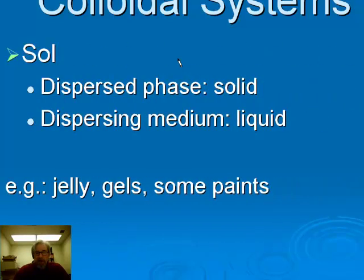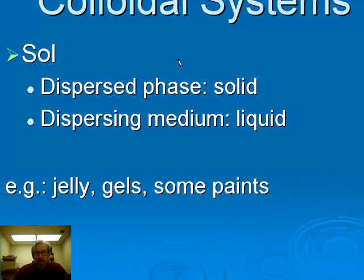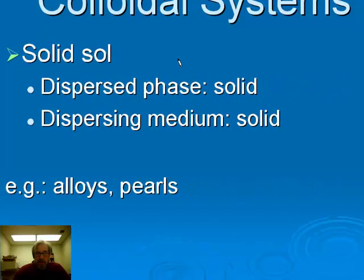A sol is a solid dispersed through a liquid — tiny particles of solid spread through a liquid. Jelly, hair gel, and some paints are sols. A solid sol has a dispersed phase that's solid and is dispersed through a solid dispersing medium. Alloys and pearls are examples of solid sols. Pearls are actually mixtures, not pure substances — tiny particles of two different substances dispersed through one another — but because both phases are solid, they look like a pure substance.